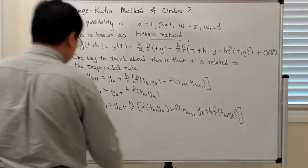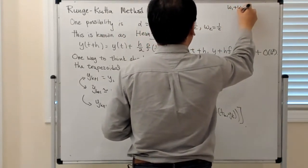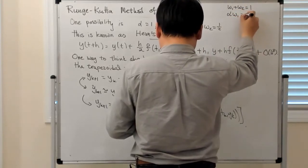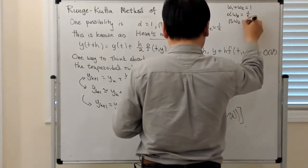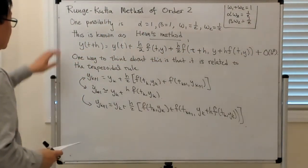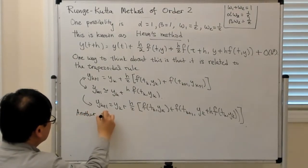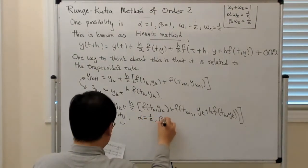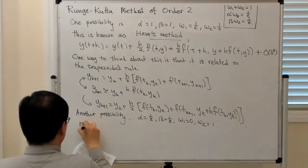Another set of values satisfying the constraints w1+w2=1, α·w2=1/2, β·w2=1/2 is: α = 1/2, β = 1/2, w1 = 0, w2 = 1. This gives what is known as the modified Euler method.